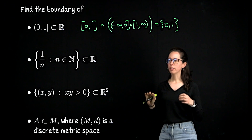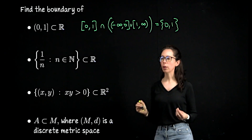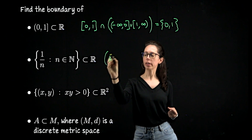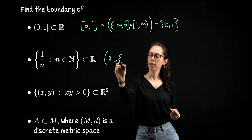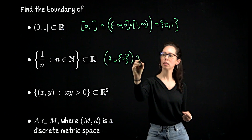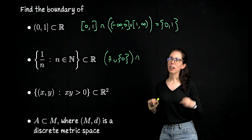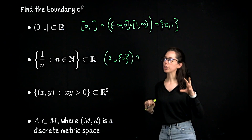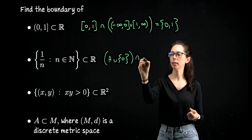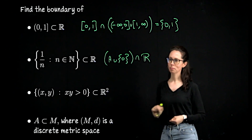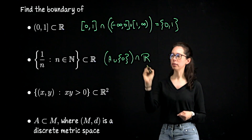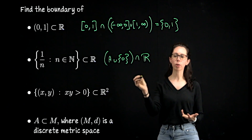For the Archimedean set — let me call this set A — the closure is A together with its accumulation point at zero. Kind of like how the closure of the complement of the integers was all of R, that's also happening here. So the boundary is going to be the original set together with the point at zero.